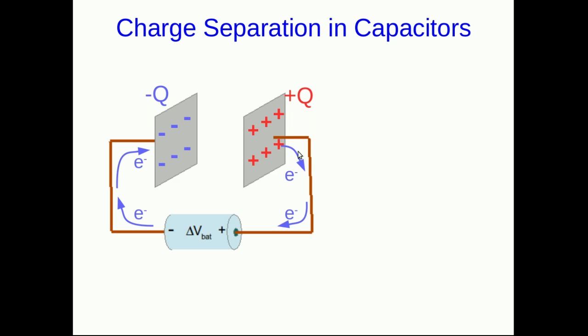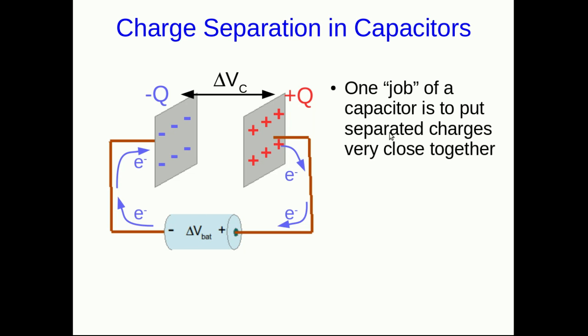Well this is the picture we had of what happens in a capacitor when we discussed them earlier in the course. So there's our charge separation. We have a potential difference. And notice that the real source of the potential difference here wasn't the capacitor. It was the battery. Basically what the capacitor is doing is it's taking those charges separated by the battery and putting them very close together.